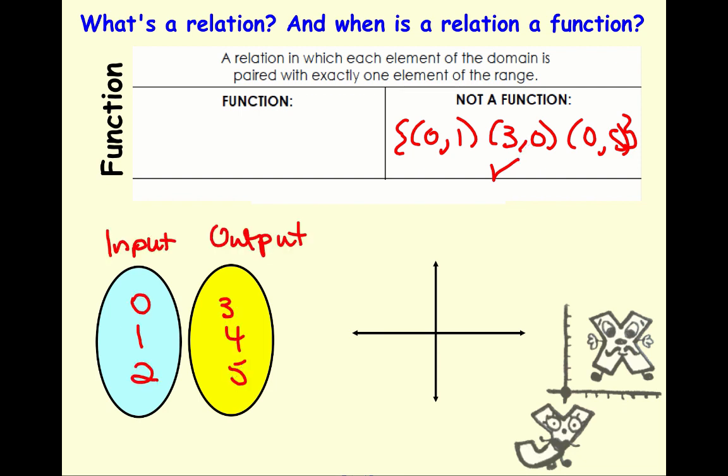When we're looking at a mapping and we're trying to see is this a function or not a function, it depends on the outputs and inputs. Each of my inputs, 0 has 1 output, 1 has 1 output, and 2 has 1 output, so it's a function. But if 2 maps to both 3 and 4, then this would not be a function because 2 has 2 different outputs.